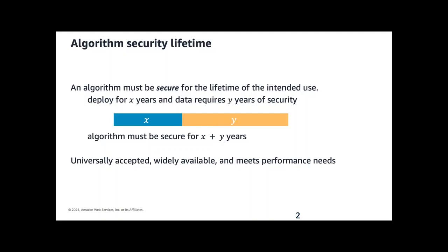For something like confidentiality, we might need to protect data for 15 years. If we know it's going to take five years to update and deprecate our old deployments, then I need an algorithm that is secure for 20 years.